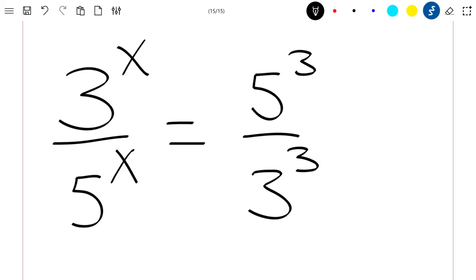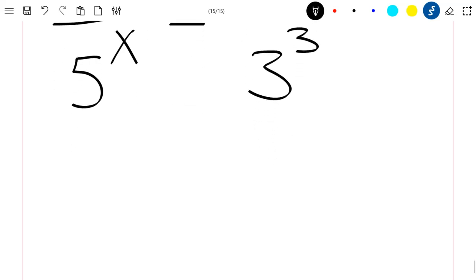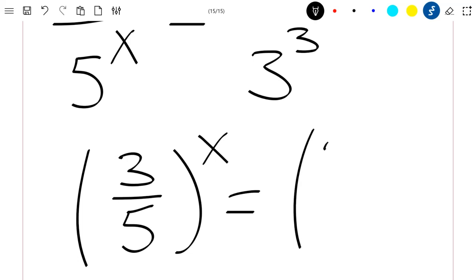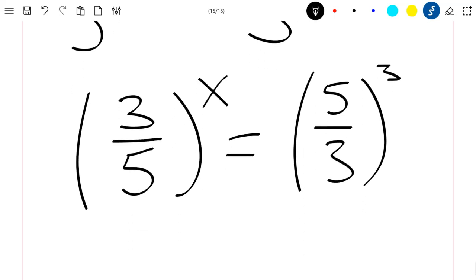Let's rewrite this equation. We can rewrite this as 3 divided by 5, everything to the power x. This is the properties of powers, which is equal to 5 divided by 3, everything to the power 3.